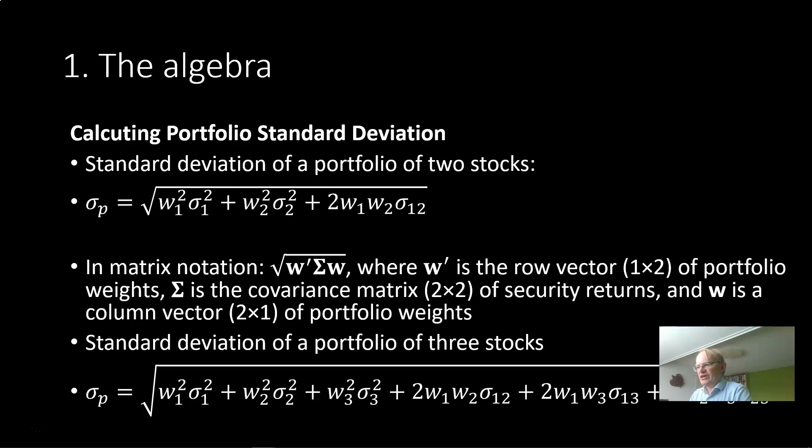The standard deviation of portfolio returns of a portfolio of two stocks can be easily calculated as the square root of the weight of the first stock squared times the variance of the first stock plus the weight of the second stock squared times the variance plus two times the weight of stock one times the weight of stock two times the covariance. This is a well-known formula that you can find in almost any finance textbook.